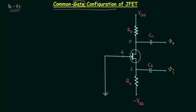The gate is connected to the ground and there are two DC supplies: VDD and VSS. VDD is positive and VSS is negative. This means the VDD terminal is at higher potential compared to ground, and the VSS terminal is at lower potential compared to ground.